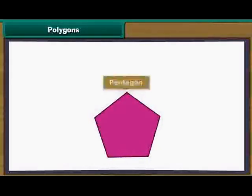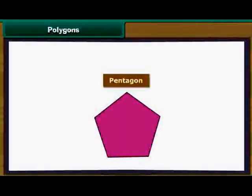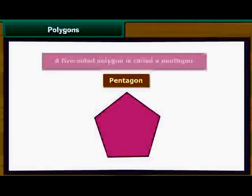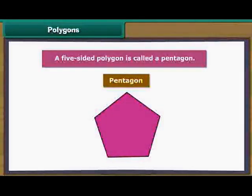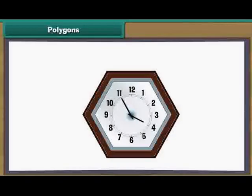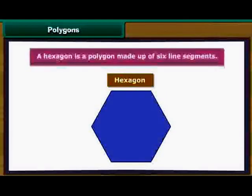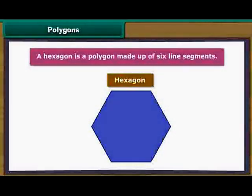Look at this image of the US Army Headquarters. It is known as the Pentagon, as it has five sides. A five-sided polygon is called a pentagon. Here is a clock. Let us provide its borders. We have a border of six line segments for the clock. A hexagon is a polygon made up of six line segments.